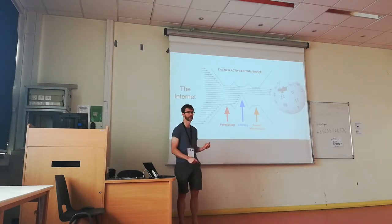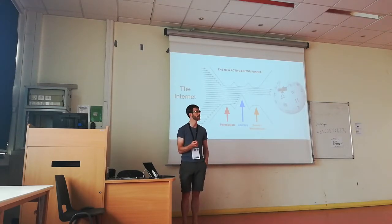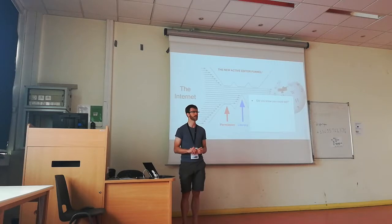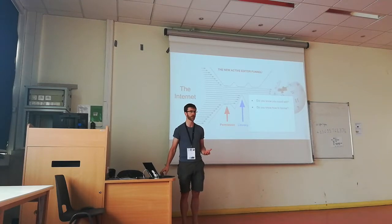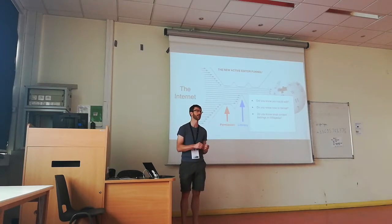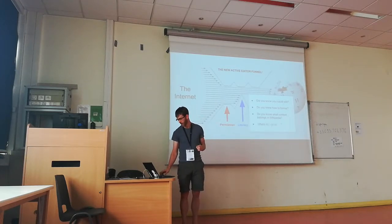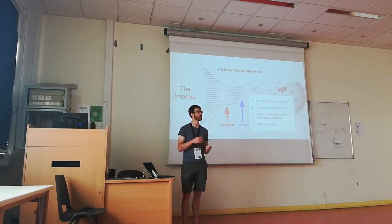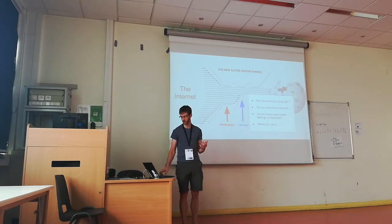The next barrier, and a really big concern, is literacy: do you understand what's going on in front of you? Do you know how to edit? It turns out it's not very easy to edit WikiMarkup. Do you know how to format text and the page? Can you even read the formatting that's already there? Do you know what content belongs in Wikipedia? And where do you go to get help, report a problem, or say that somebody's harassing you? Not super clear — it's kind of hard to figure these things out.